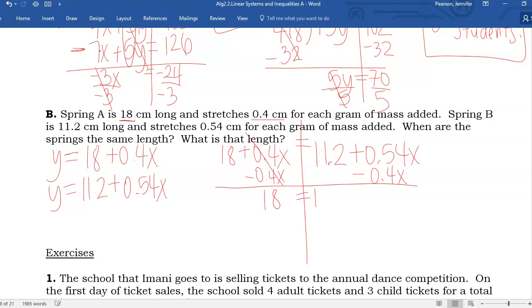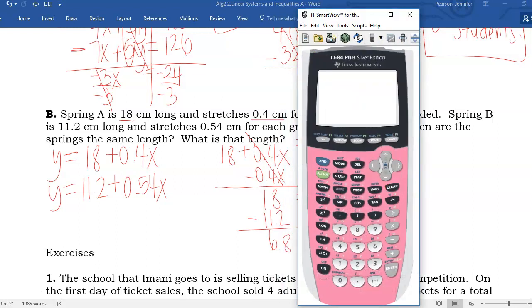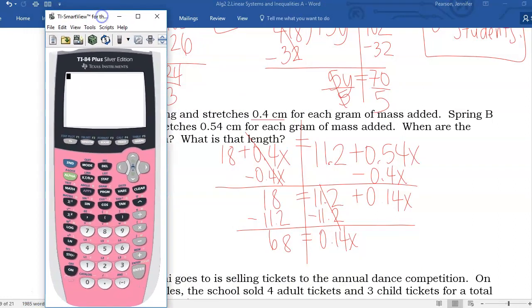And 0.54, take away 0.4, is 0.14. So, now I will minus 11.2, because I need to draw my constants on the other side from the X. That gives me 0.14X equals... What was that? 6.8. I don't trust myself right now, especially because I won't be able to divide that in my head. So, 18 take away 11.2, 6.8. And then, we're going to divide both sides by 0.14.